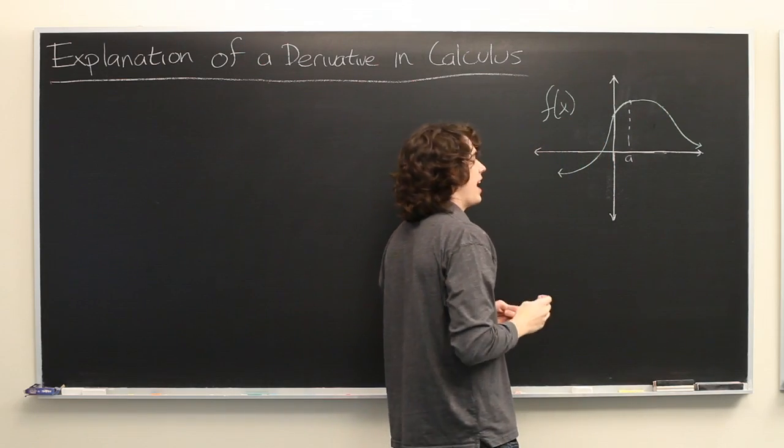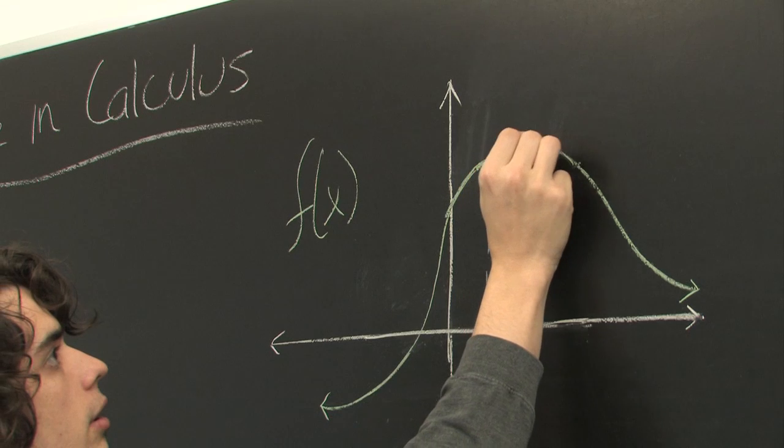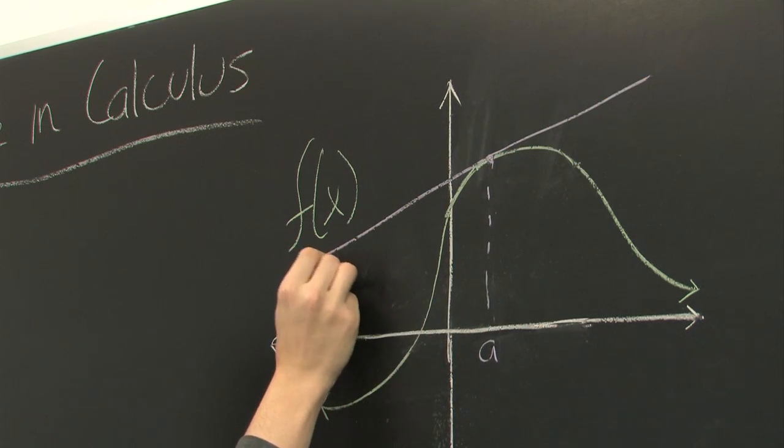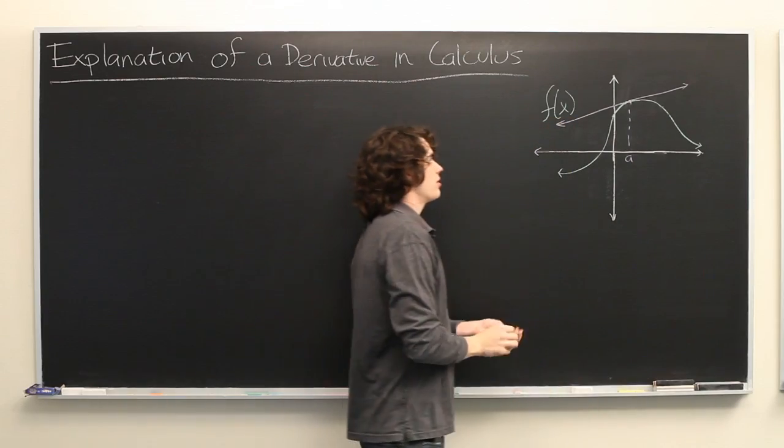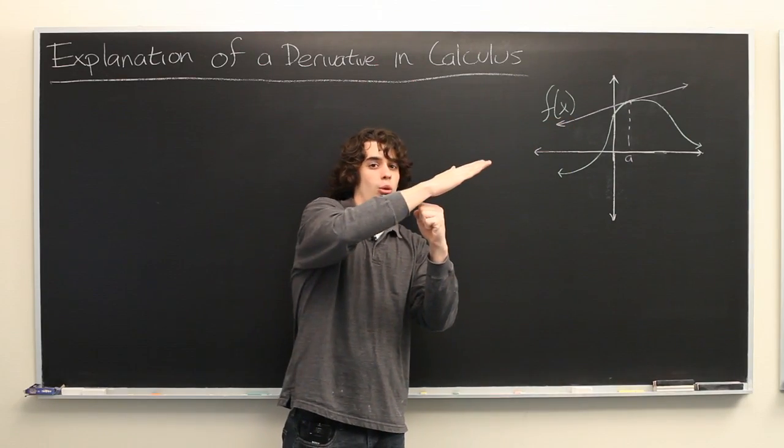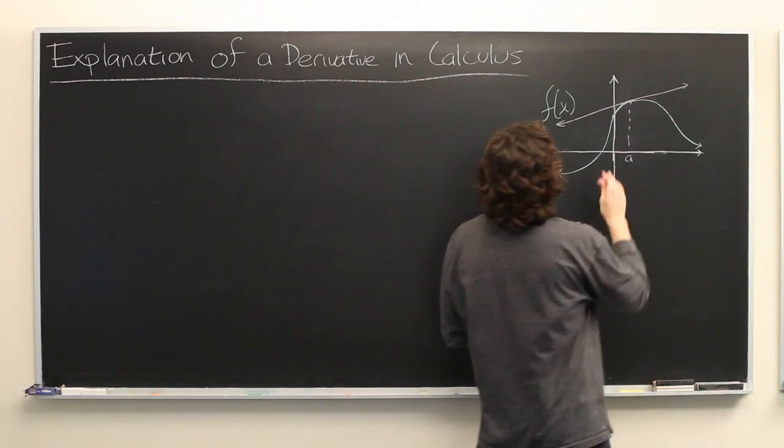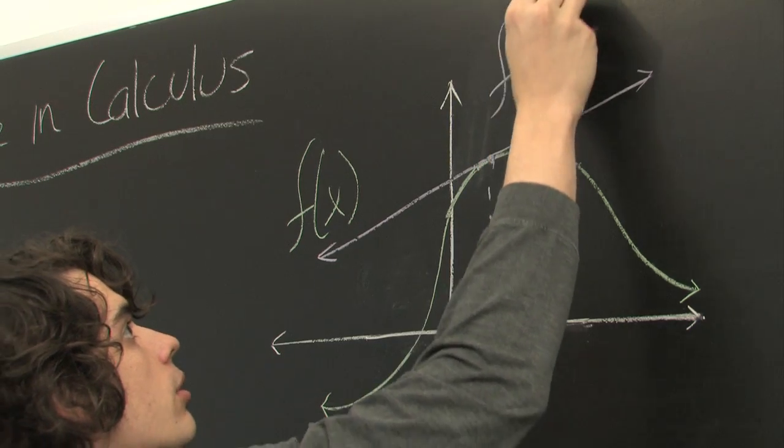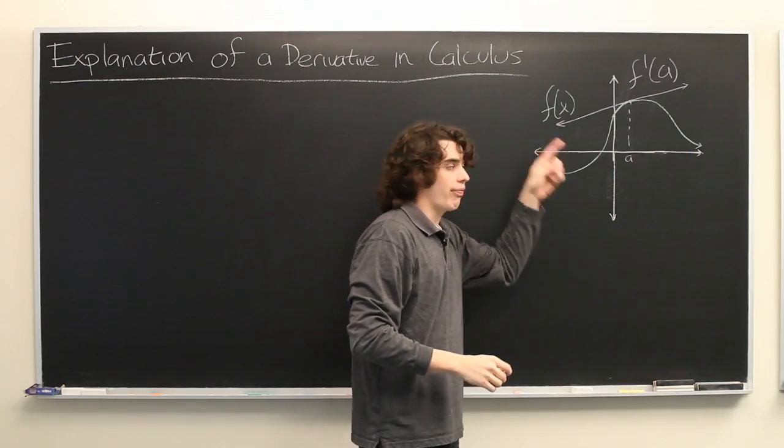Suppose we draw a tangent line to the graph at the point A. A tangent line has a rigorous definition in calculus, but conceptually, you can simply think of it as the line that just barely touches the graph at that point. Well, the slope of this tangent line will simply be equal to the derivative of the function at that point.